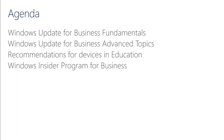Windows Update for Business will be covered in four parts. This part provides an overview of Windows Update for Business. In the second part, we will cover more advanced topics. In the third part, we will provide recommendations for both one-to-one and shared devices in education environments. Lastly, we will conclude with the fourth part, Windows Insider Program for Business.